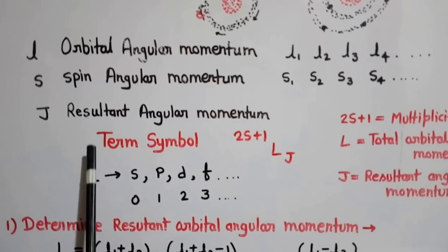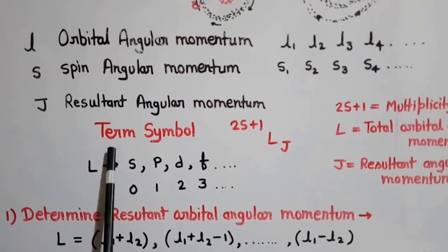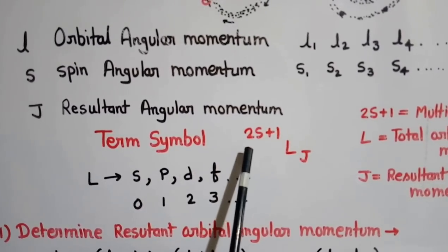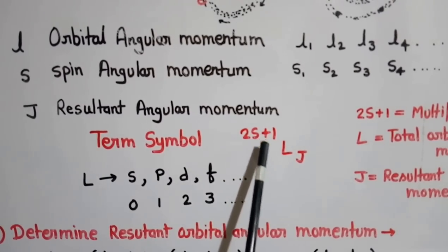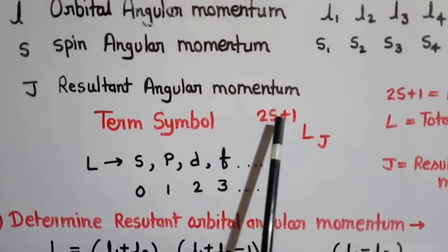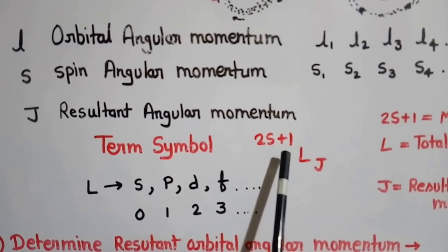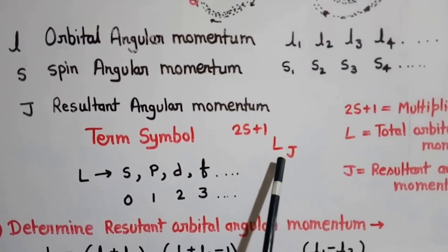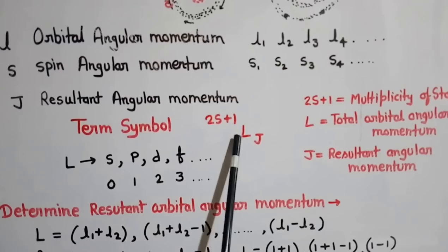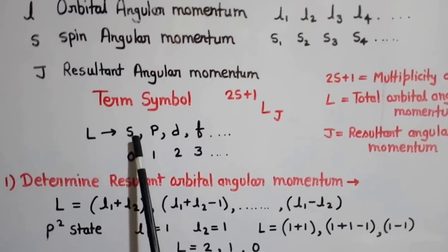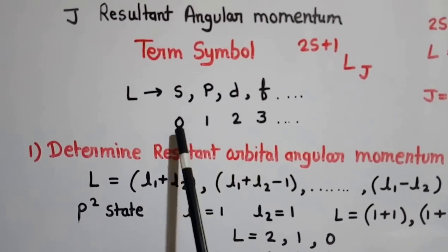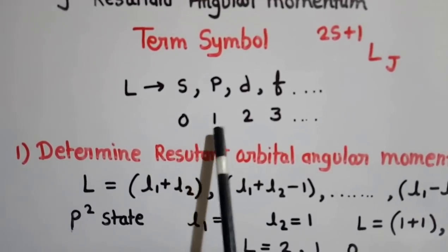The state or energy of an atom is denoted by certain term symbols. This term symbol has 2S+1 at the top, J at the lower side, and L in the middle. The quantity 2S+1 shows the multiplicity of the state, J shows the total angular momentum, and L shows the total orbital angular momentum. L is denoted by different letters: S, P, D, and F, corresponding to subshell values 0, 1, 2, and 3.